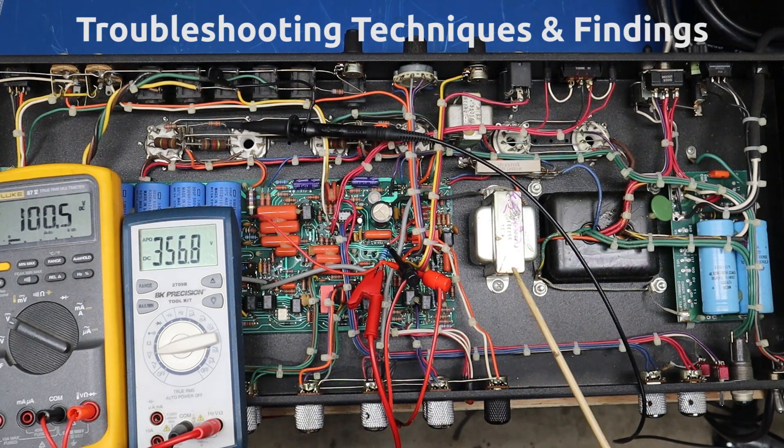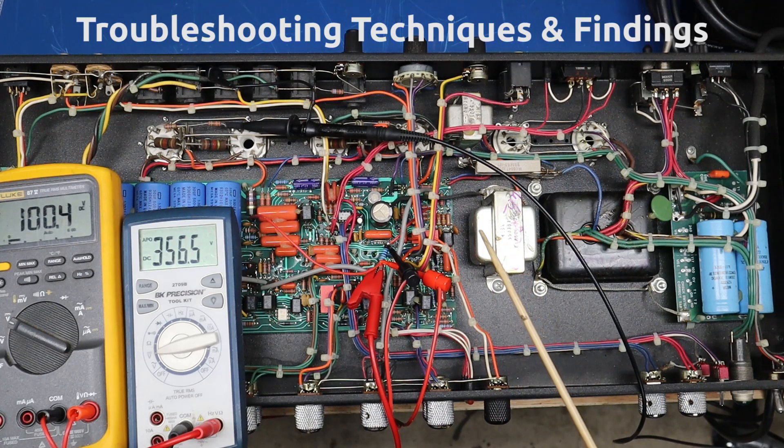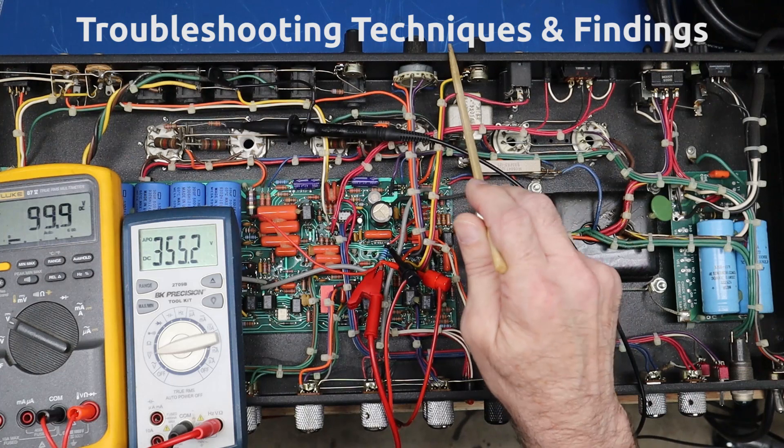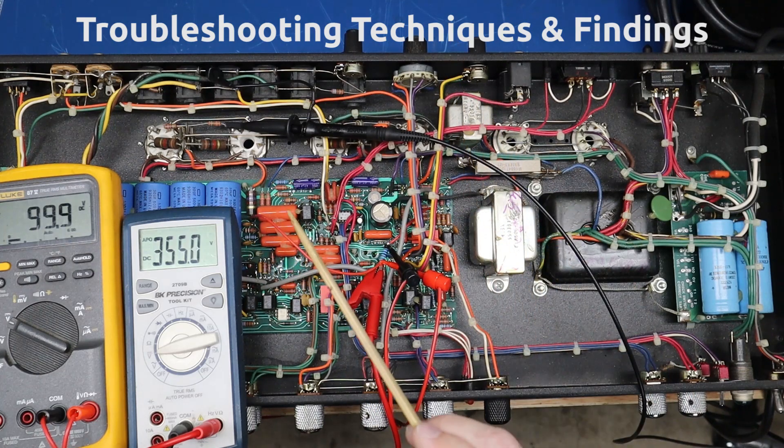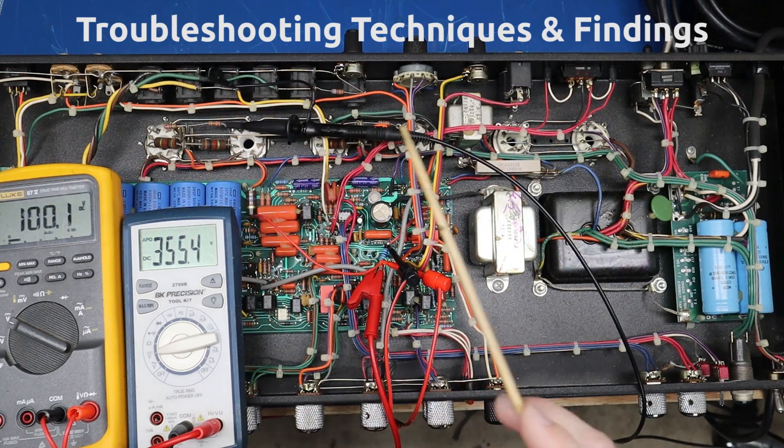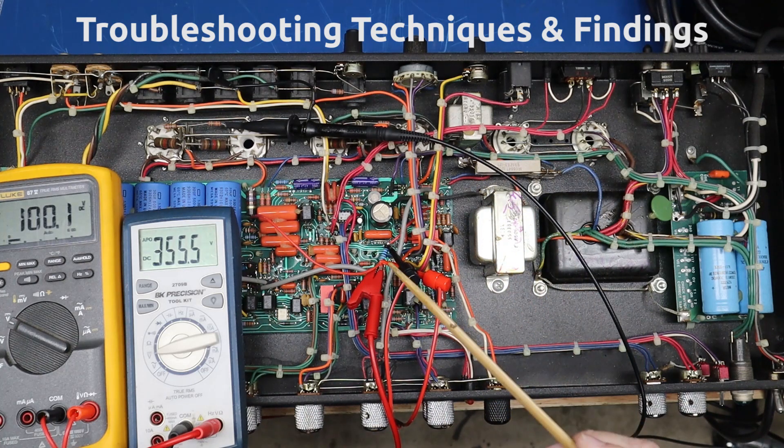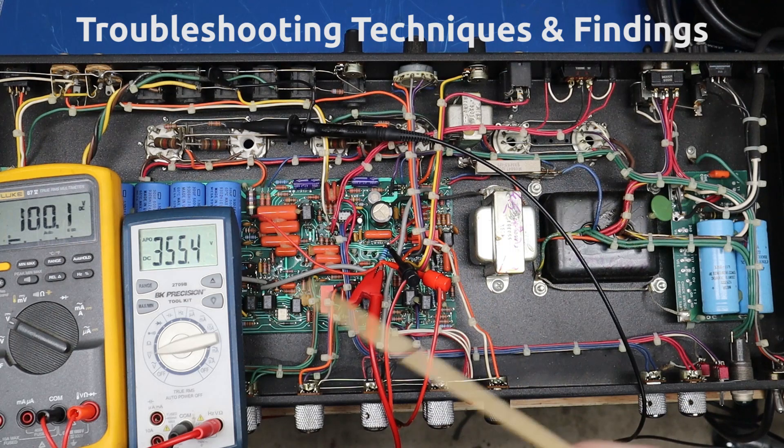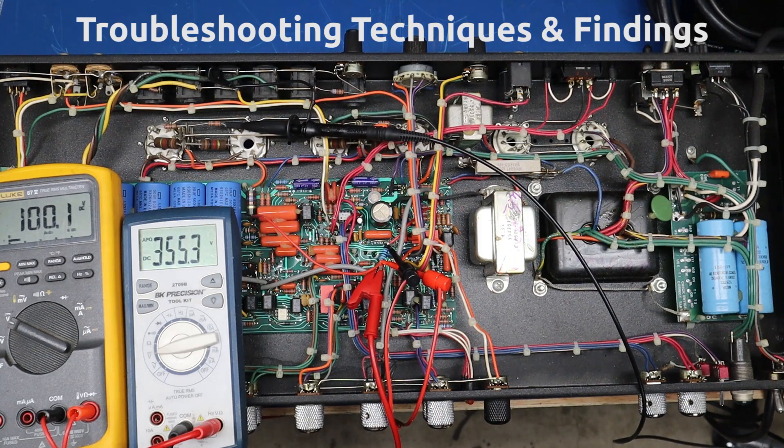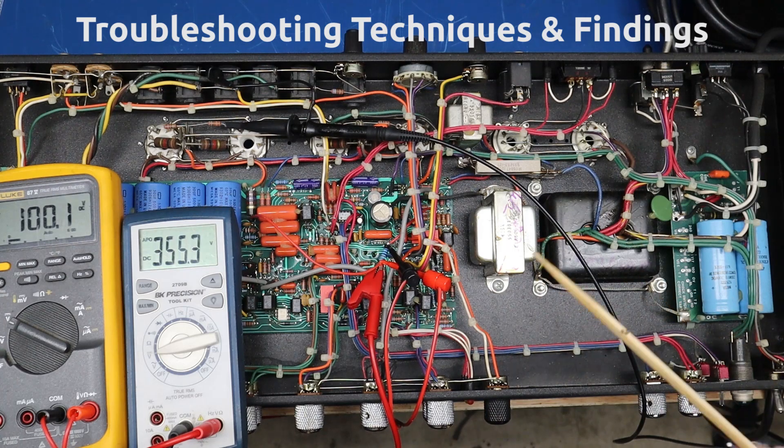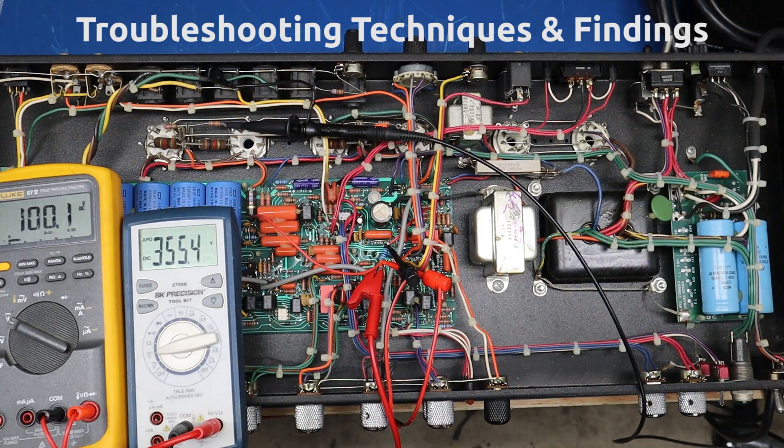And then I wanted to see what the source of the pop and snarl was. So one of my techniques is in this particular case you can switch this between solid state rectification and tube rectification. So I switched it to solid state rectification to immediately take the tubes out of concern and I got the same result. So then I knew it had nothing to do with the rectifier tubes.